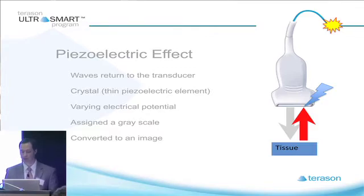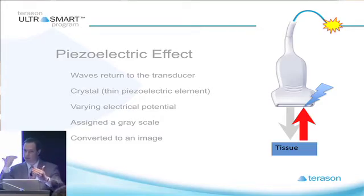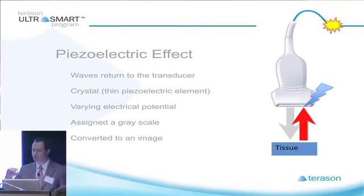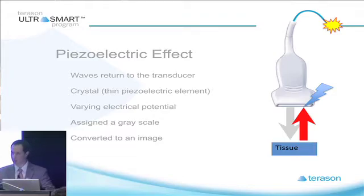That signal goes down to the tissue, then bounces off structures within the tissue, and comes back up toward the transducer. The same piezoelectric element that sent out the signals is now receiving them. It generates a varying electric potential depending on the strength of the returning signal, which is assigned a grayscale value and converted to an image.